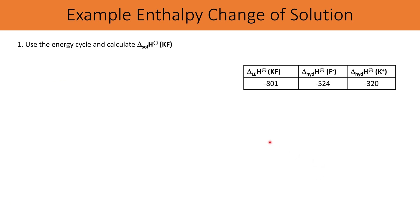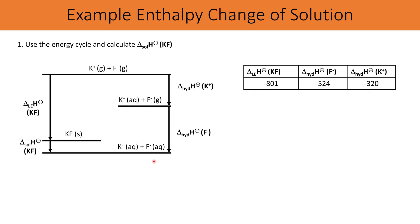Now let's look at an example of using a Born-Haber cycle to calculate an enthalpy change of solution. We're provided with some values and a Born-Haber cycle. The solid ionic compound goes to aqueous ions via the enthalpy change of solution. Alternatively, gaseous ions undergo the lattice enthalpy to form the solid ionic compound, then the enthalpy change of solution to form aqueous ions — that's Route 1. Route 2 starts at the gaseous ions and hydrates each of the ions.